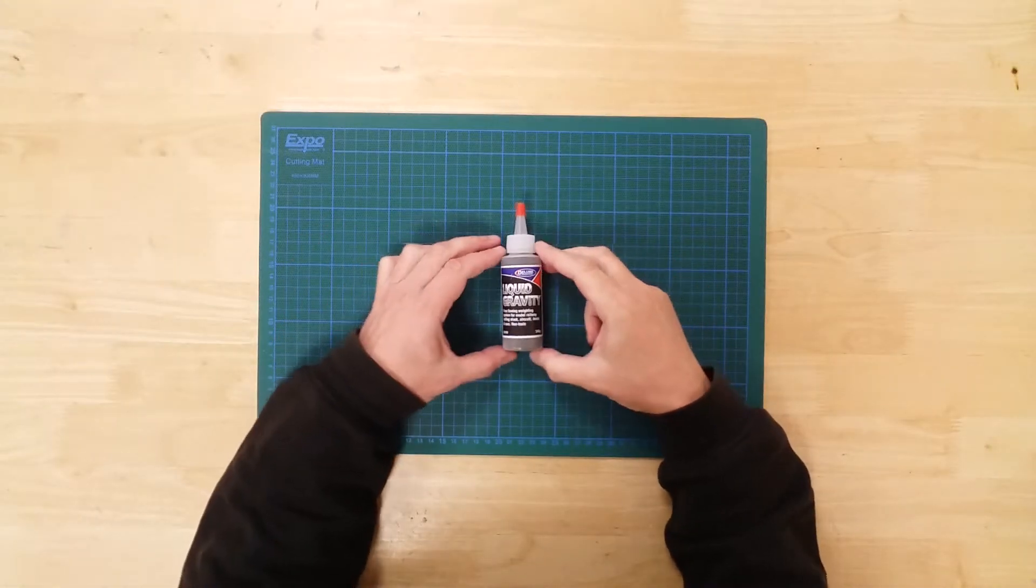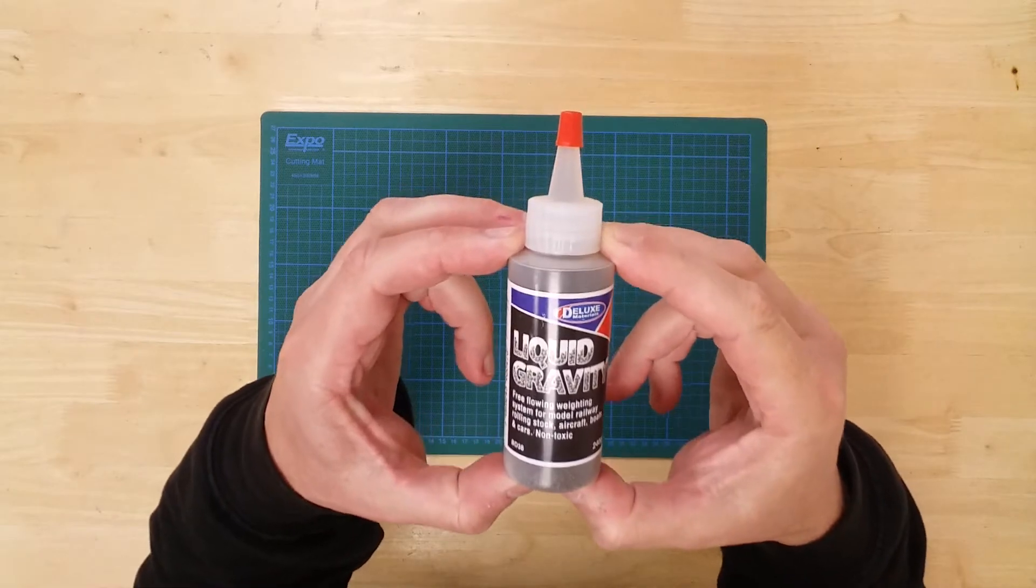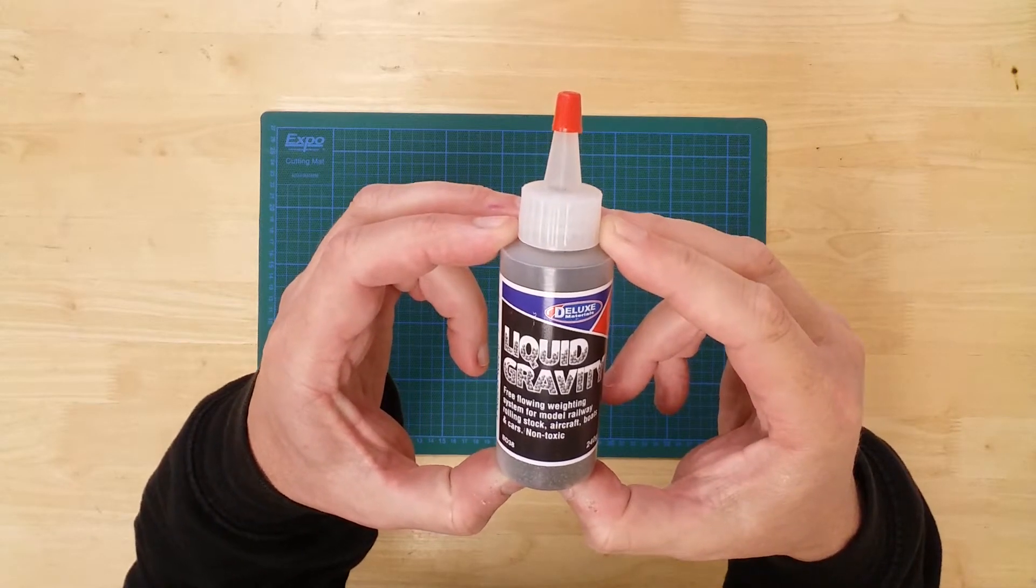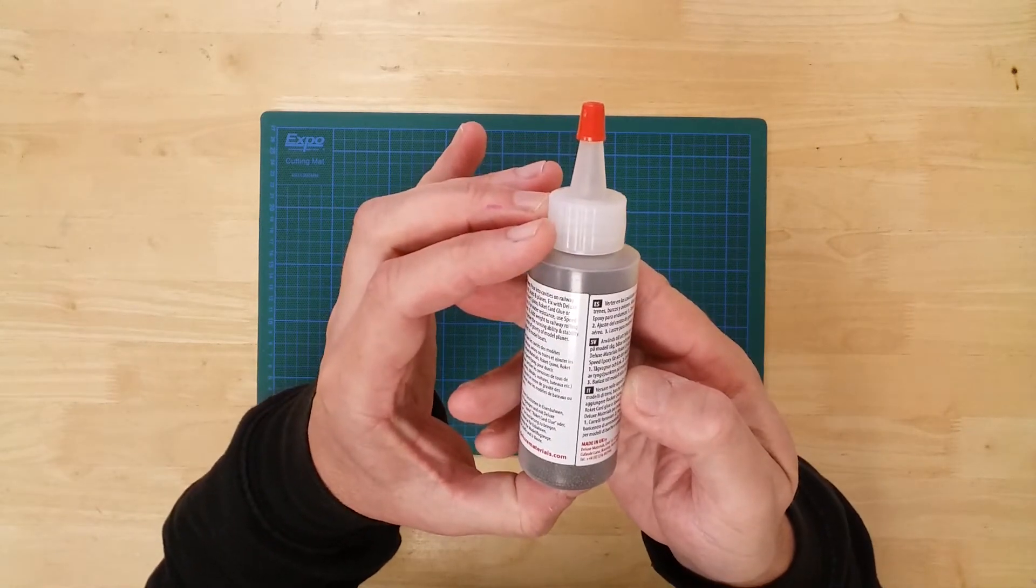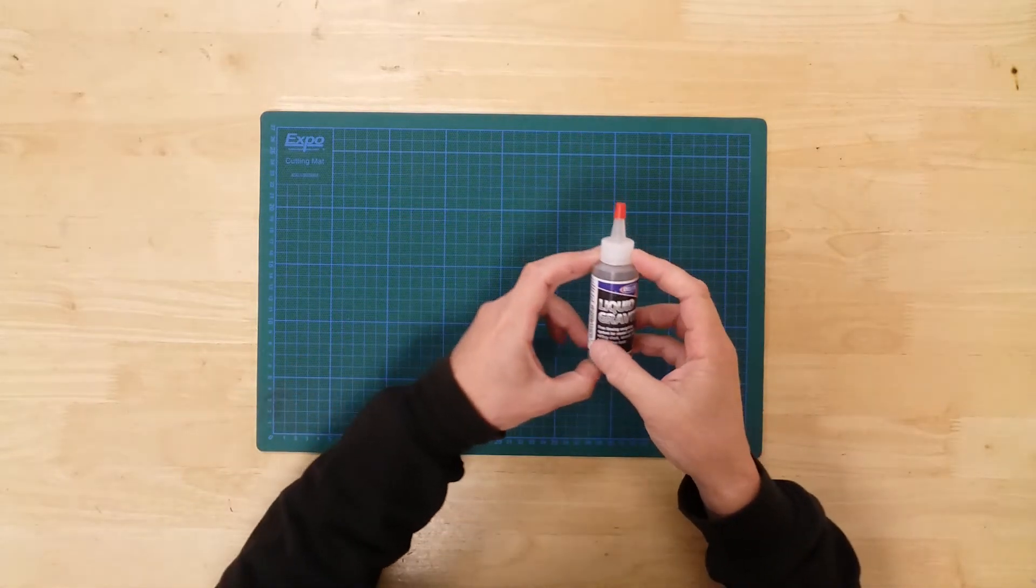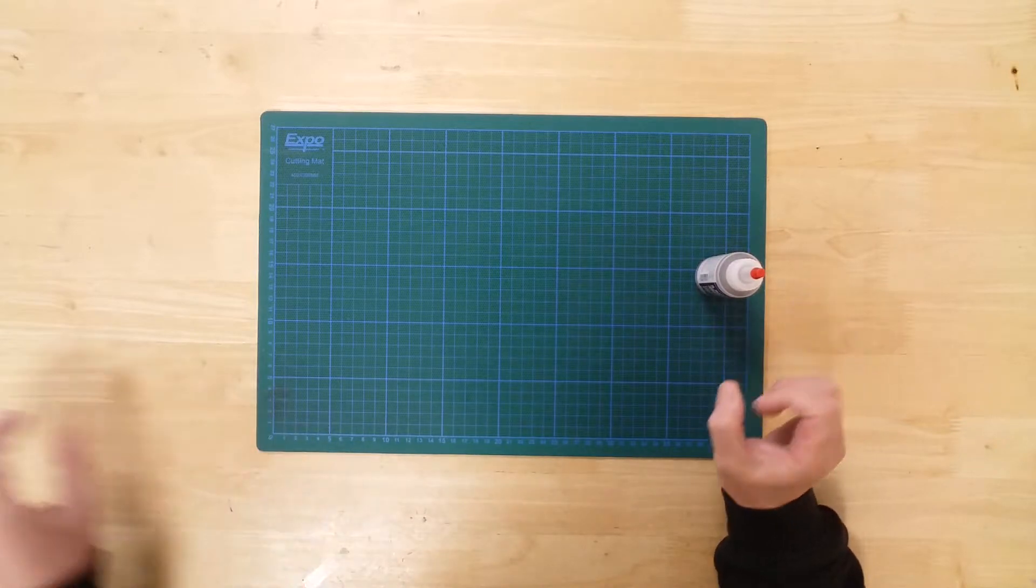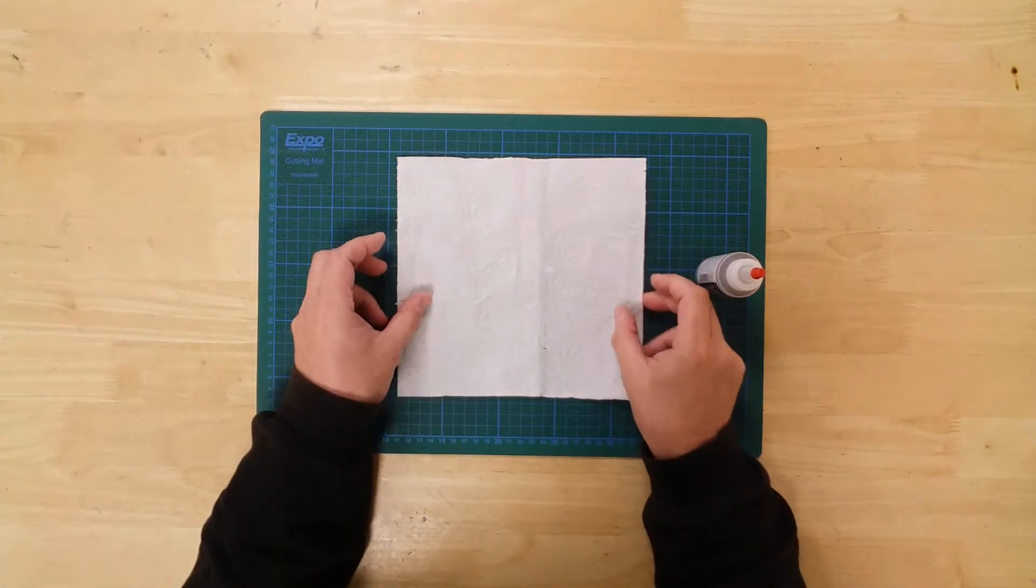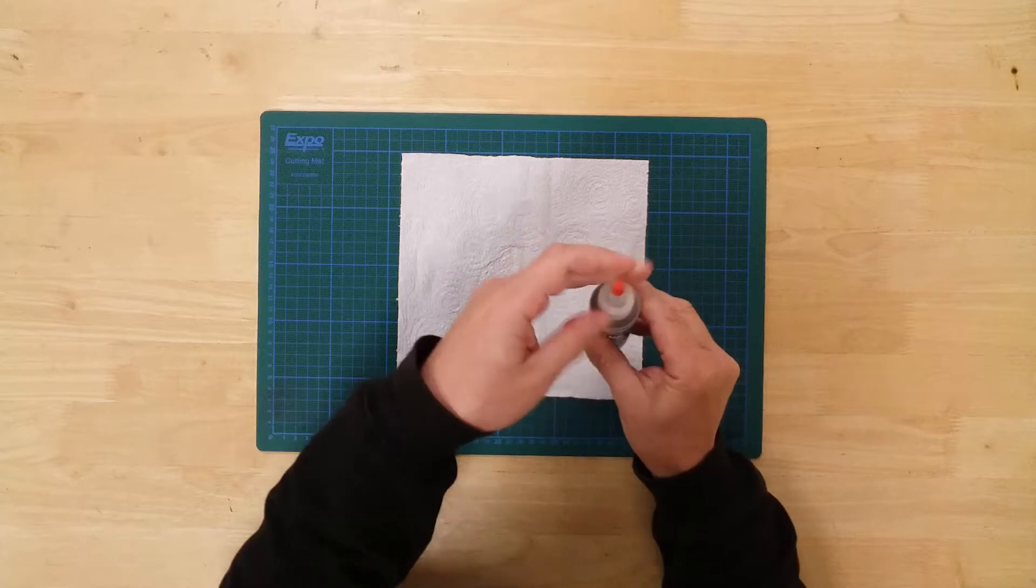This is the DLB D38, Liquid Gravity, by Deluxe Materials. Liquid Gravity is a weight and ballasting system, produced by Deluxe Materials in a 240 gram plastic bottle dispenser.